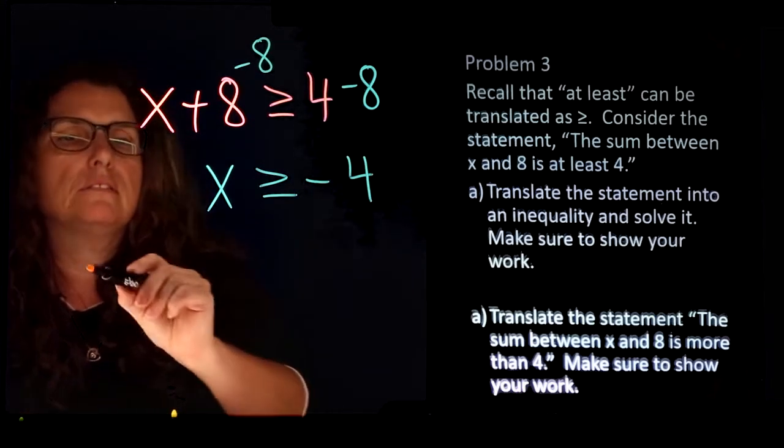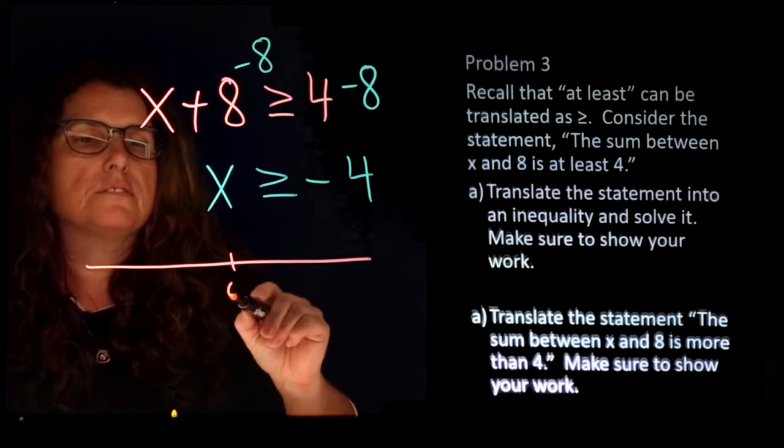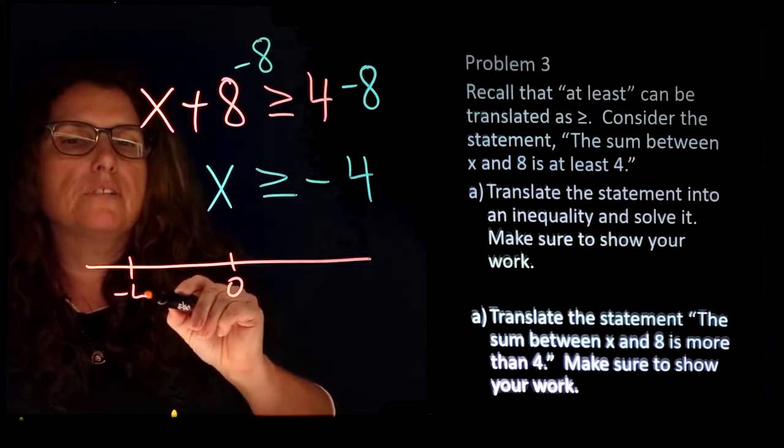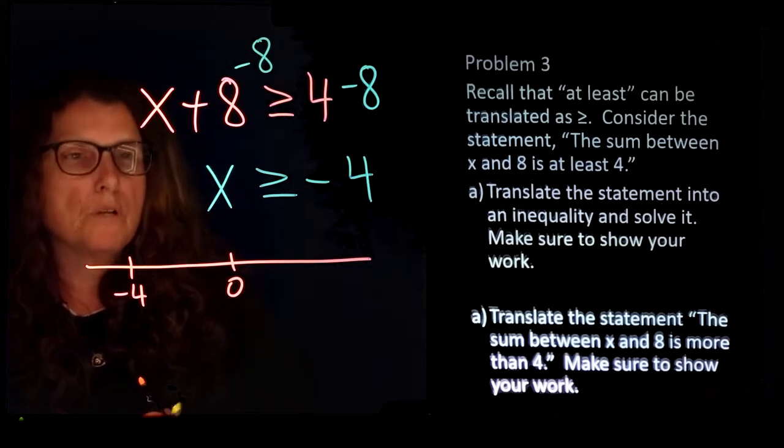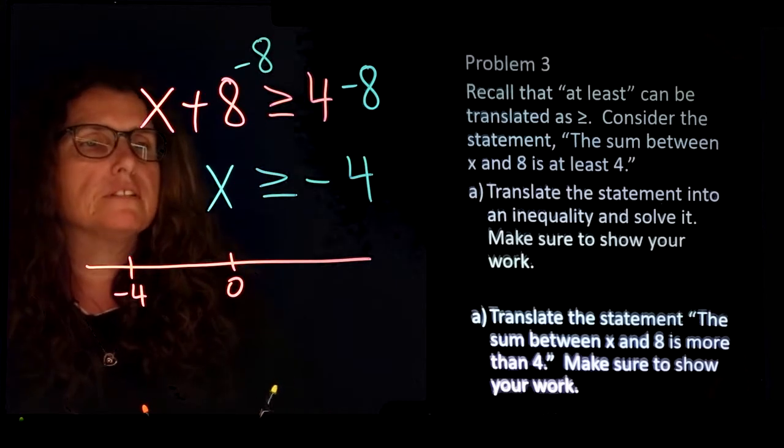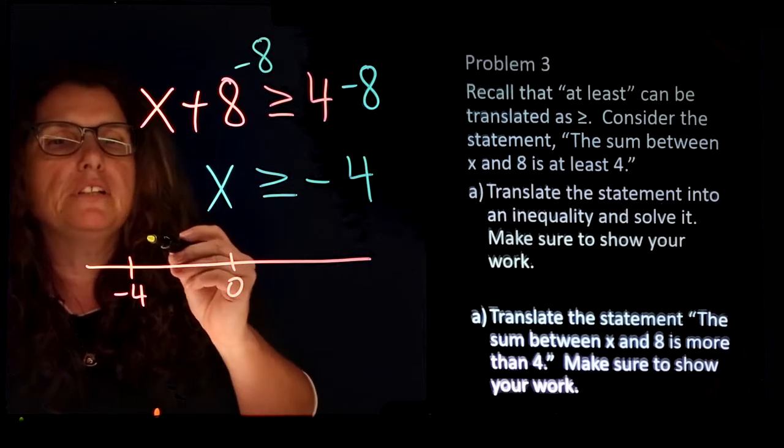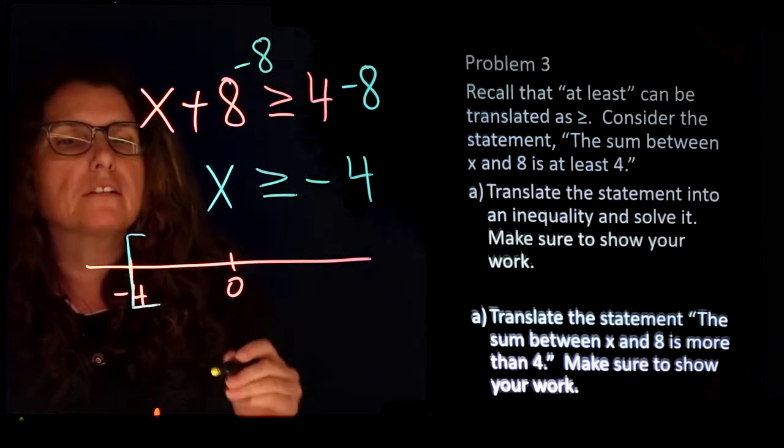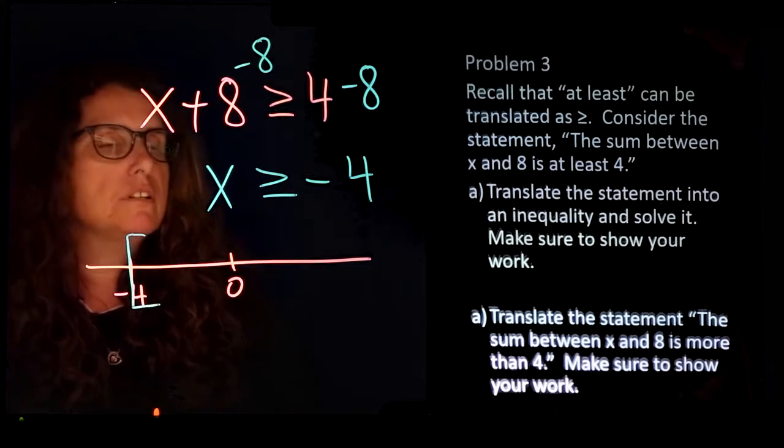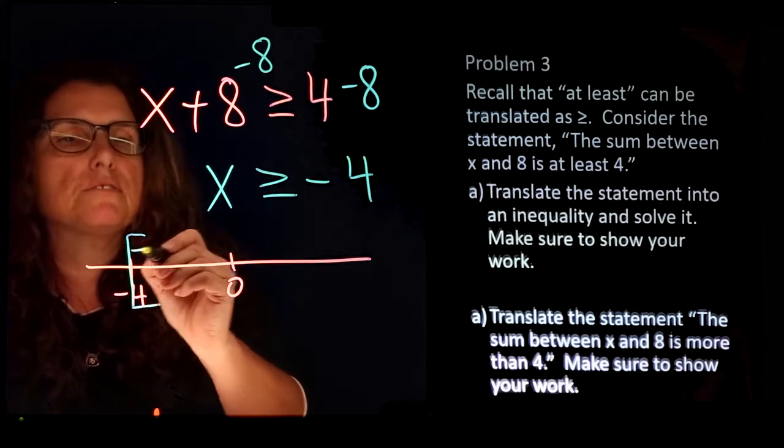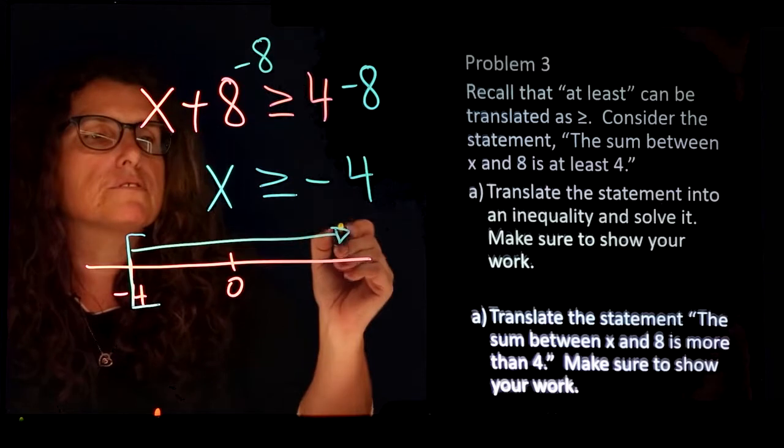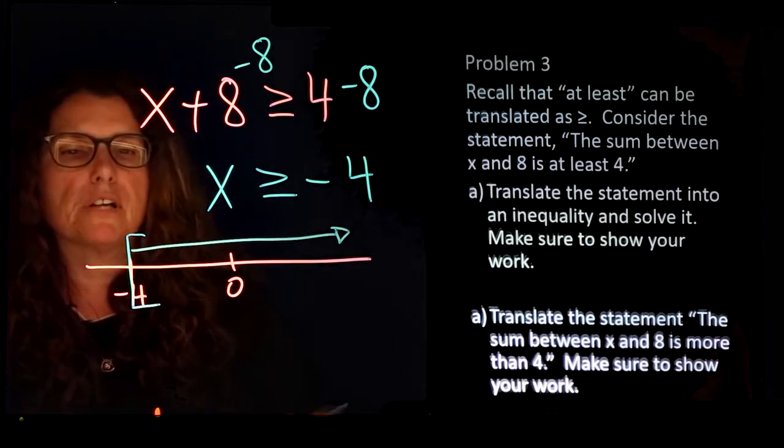On the number line, here's 0 and over here is negative 4. Because of the equality 'greater than or equal to,' we need a bracket, and this time the inequality points to the right, so our arrow—our solution—also points to the right.